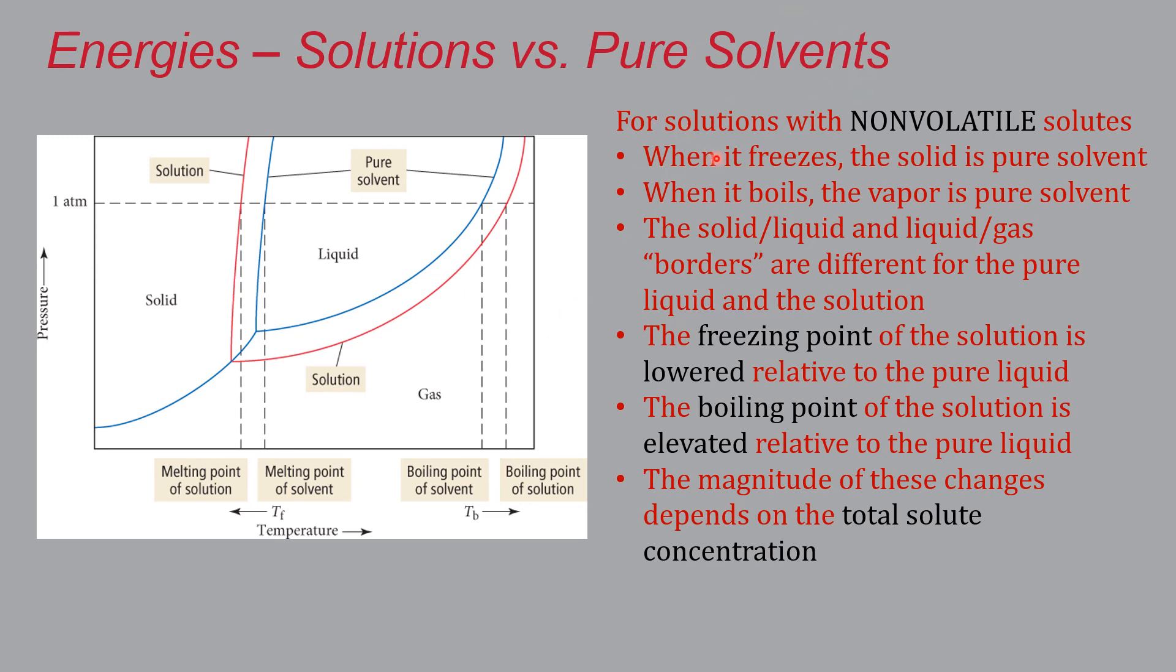So again, keep in mind, for a non-volatile solute, so these are like basically solids, you know, if you have a solution with a solid solute, when it freezes, the solid that forms is pure solvent. When it boils, the vapor is also pure solvent. The energetics change, which means it changes the temperature pressure combinations where they're at equilibrium. The freezing point is lowered relative to that of the pure liquid. The boiling point is elevated relative to the pure liquid solid. And here's the important thing. The magnitude of this change depends on the total solute concentration, not what it is, only how much there is in there.